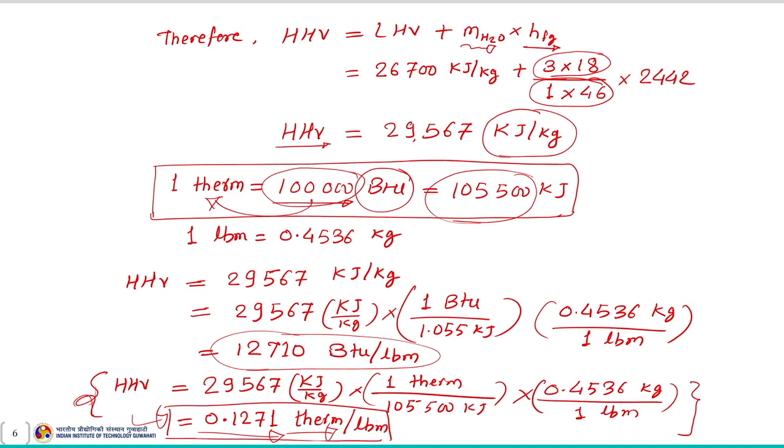I hope it is now clear how to estimate the higher heating value if the lower heating value and the latent heat of vaporization of water are given. Using these two terms you can easily calculate the HHV. The next example is in a similar line — here we calculate the higher heating value of a coal sample (solid fuel) given its composition.